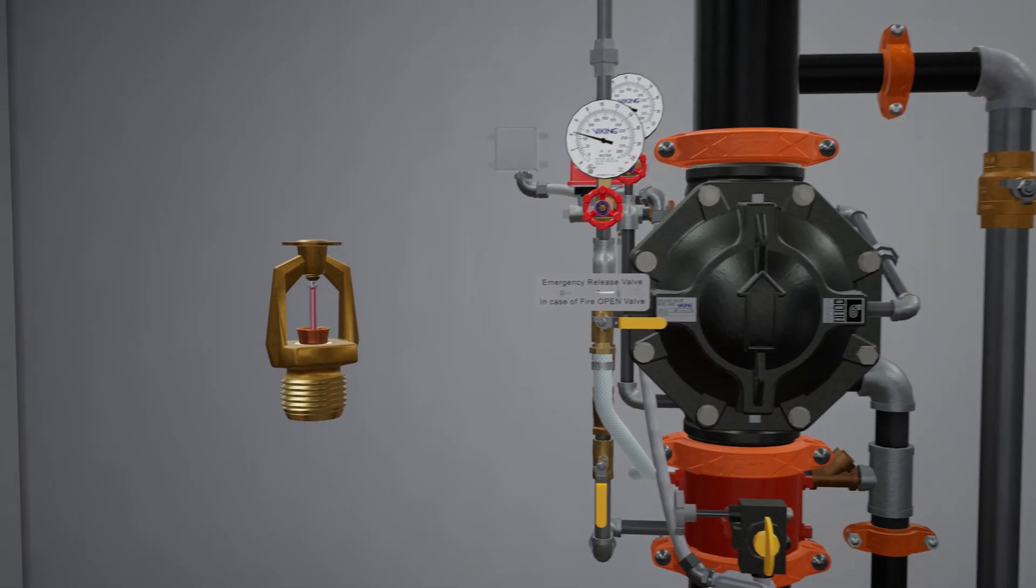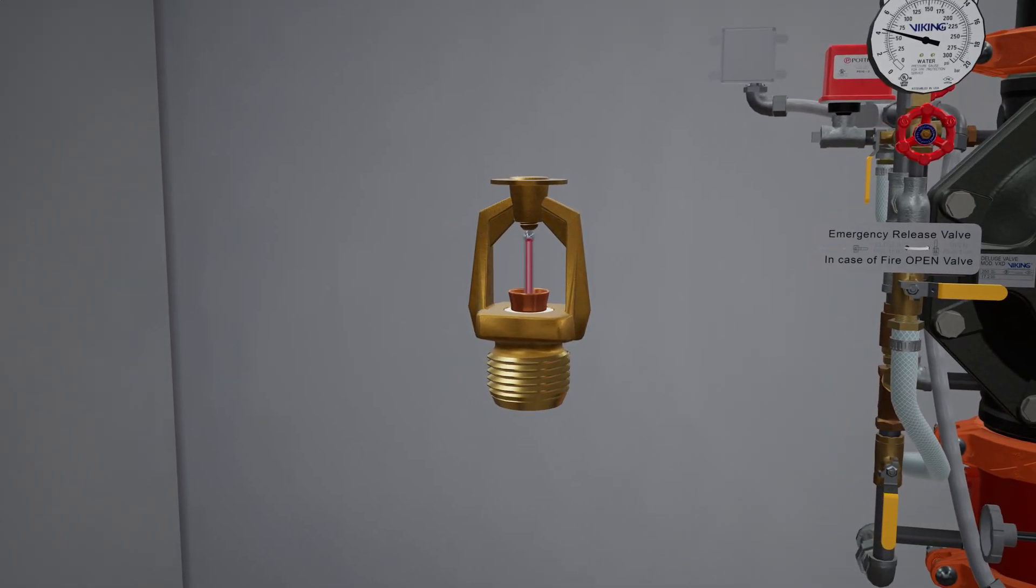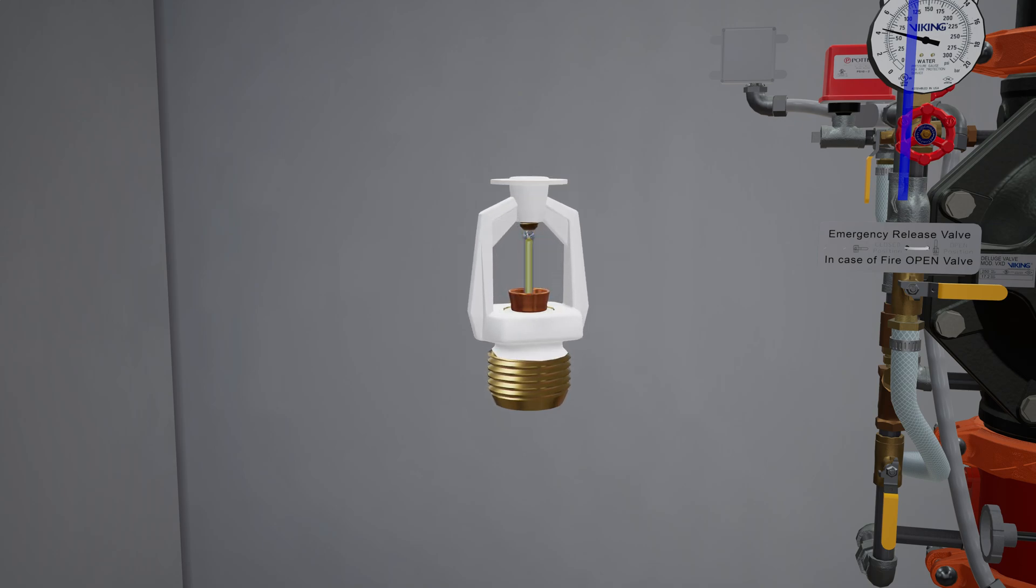The Viking VK800 is a fixed temperature release that is installed along a pilot line to activate deluge and pre-action systems. It is available in a range of finishes and temperature releases to suit various applications. Due to its specialized design, it has spacing advantages over standard sprinklers in several situations.